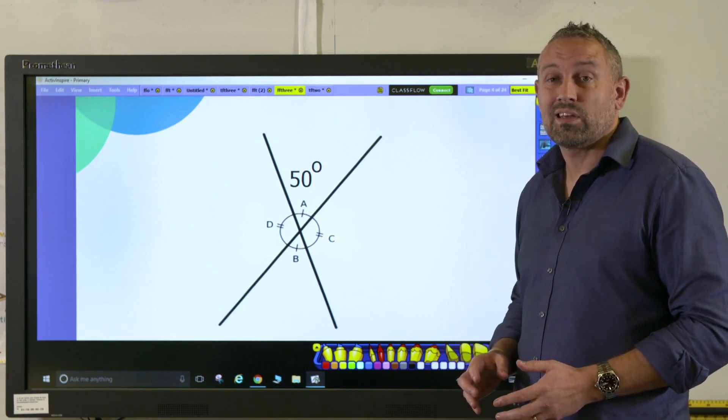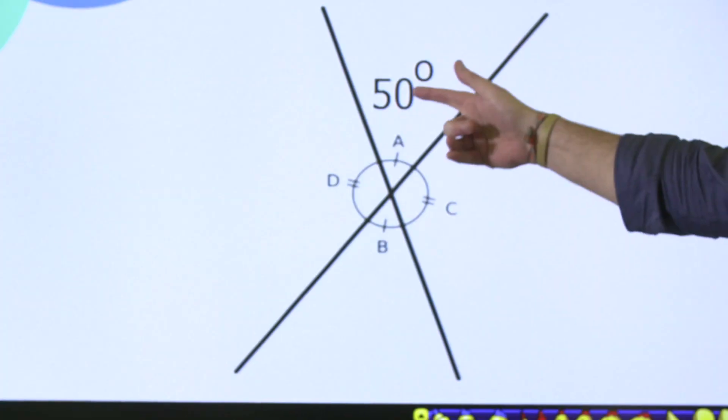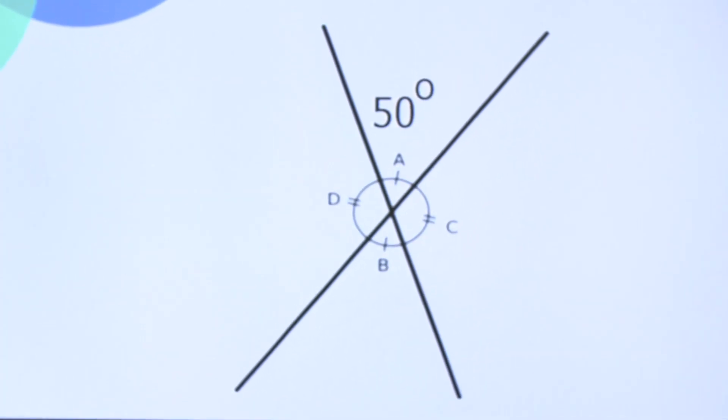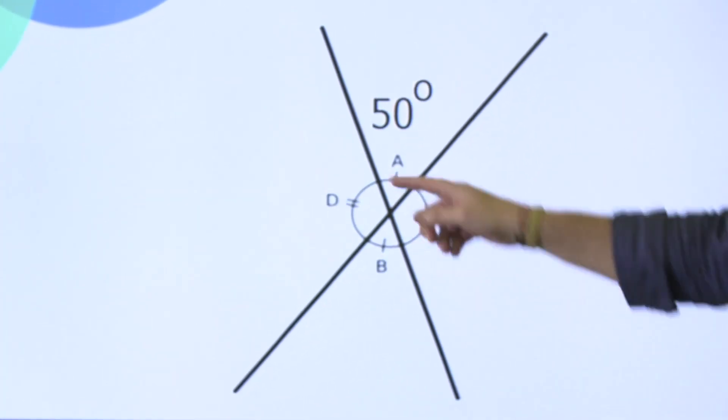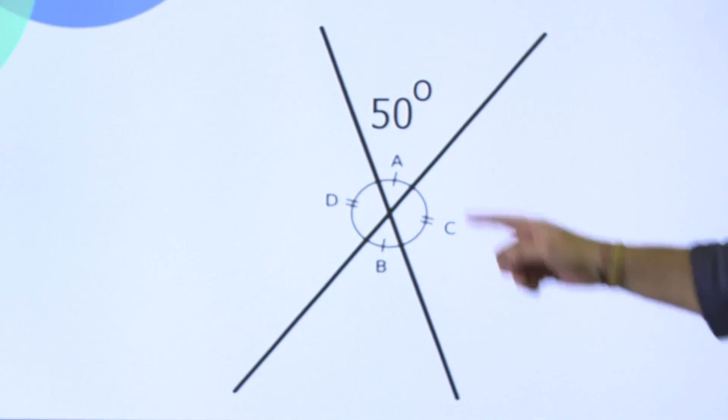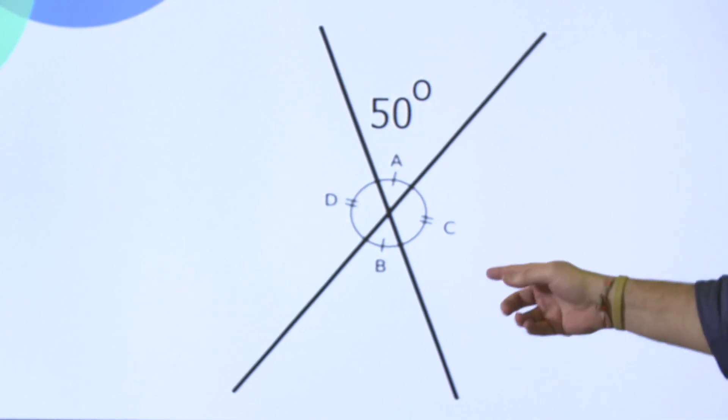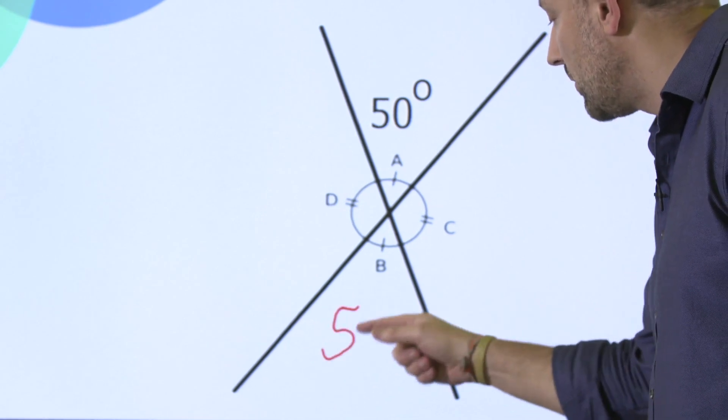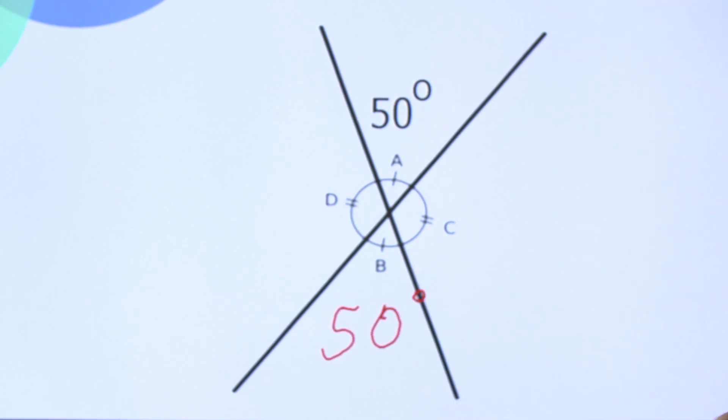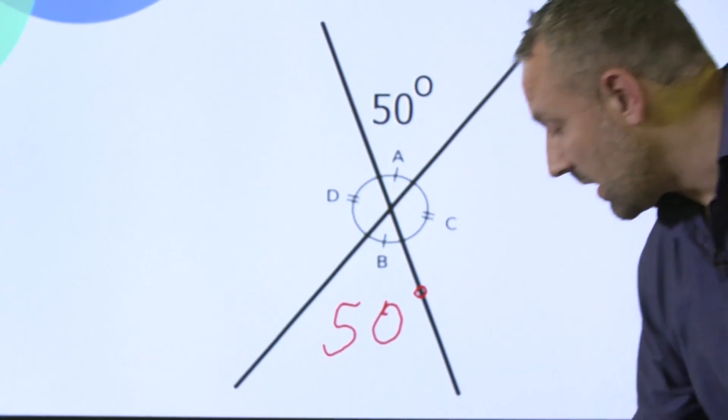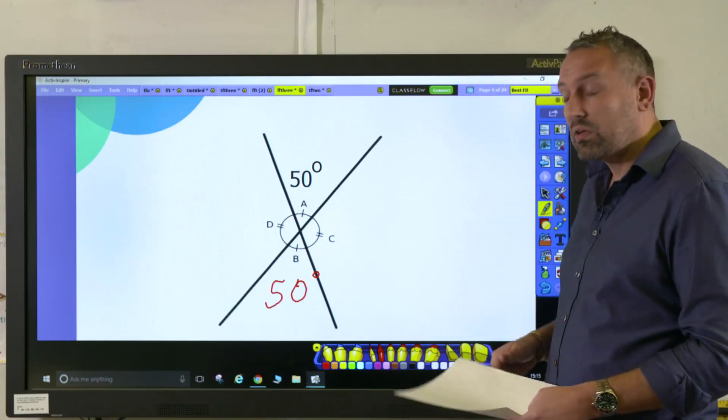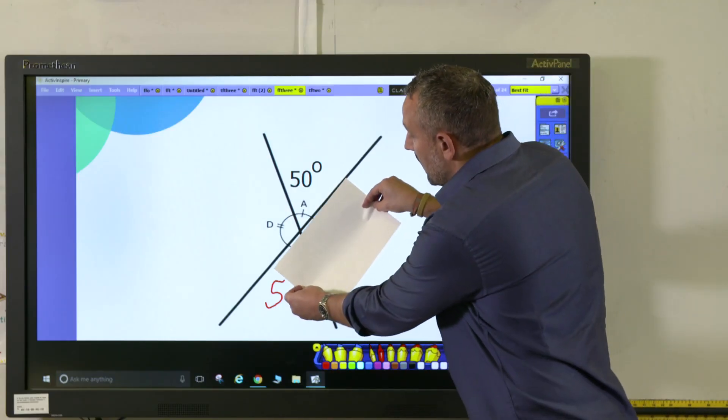The final one is this one here, and again the crucial piece of information is that children have to understand that opposite angles are equal and always equal the same measurement. So here, if angle A equals 50 degrees, angle B, which is this one, will also equal 50 degrees.